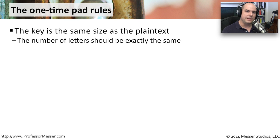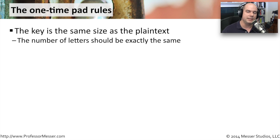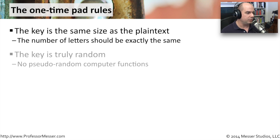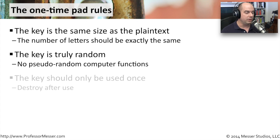For the one-time pad to be this secure, a few rules must be kept in mind. The first rule is that the key — the piece of information on our pad of paper — needs to be the same size as the plaintext we're encrypting. The number of letters in the key and the number of letters in the message must be exactly the same. The second rule is that the key must be completely randomized — not pseudo-random or a static computer function, but a truly random set of characters or numbers.